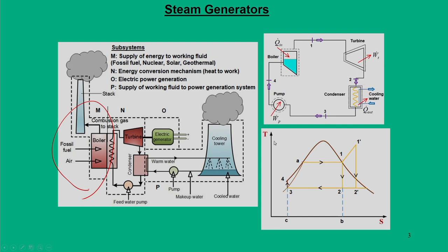Looking specifically at the Rankine cycle, the heat addition phase starts from point 4 and ends at point 1 dash. From 4 to A is the liquid phase heat addition at constant pressure until we reach the saturation point. From A to 1 is the latent heat addition, where liquid water becomes saturated vapor. From 1 to 1 dash is the superheated region. Essentially, from point 4 to 1 dash the entire heat addition Q-in takes place.